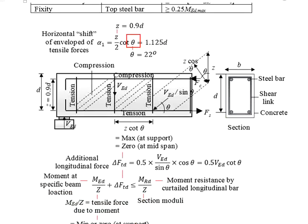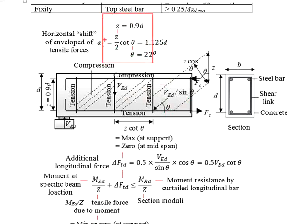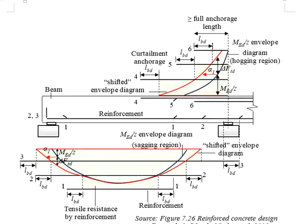Theta represents the angle of the diagonal compressive strut. Assuming the beam section is lightly loaded and reinforced, the diagonal strut has an angle of 22 degrees. Substituting this gives alpha 1 equals 1.125d. Therefore, you may straight away assume that alpha 1 is equal to 1.125 times the effective depth of the section. Once you obtain this shifted MEd per z, you can determine how the reinforcement bar can be curtailed.